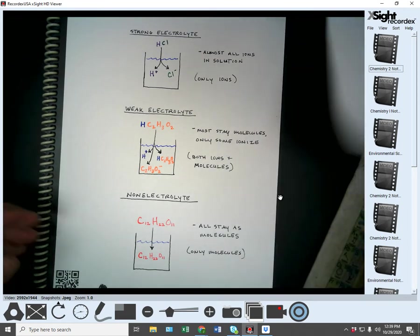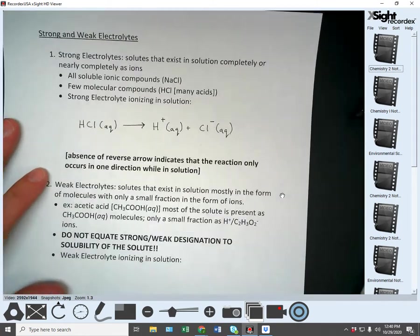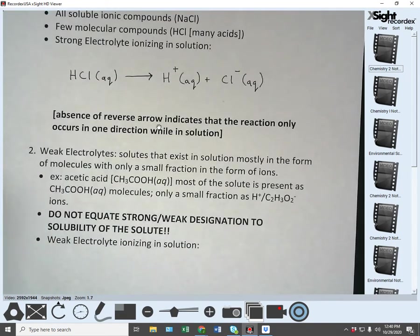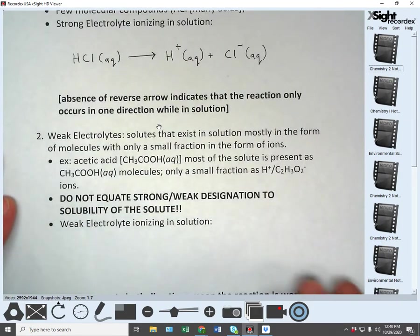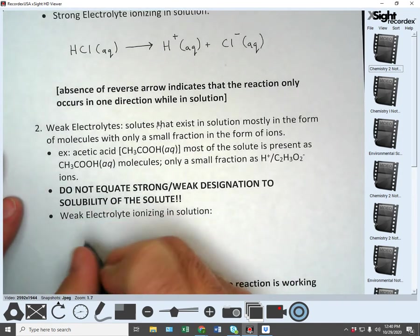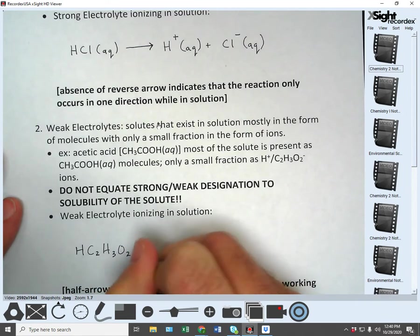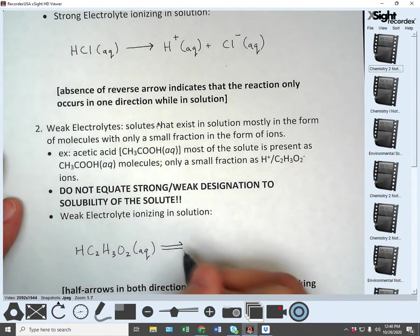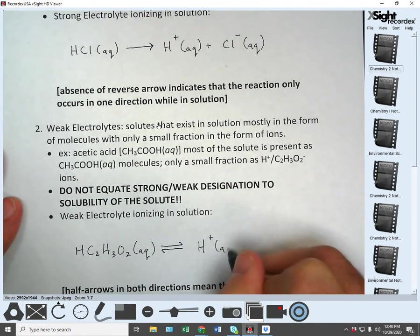Now, if we go back to the notes section of this, we had the strong electrolyte. The reaction only occurs in one direction because it only ionizes. A weak electrolyte, however, like acetic acid, will have some of both. So the ionizing and solution for that looks kind of like this. And then we have these little half-arrow deals.